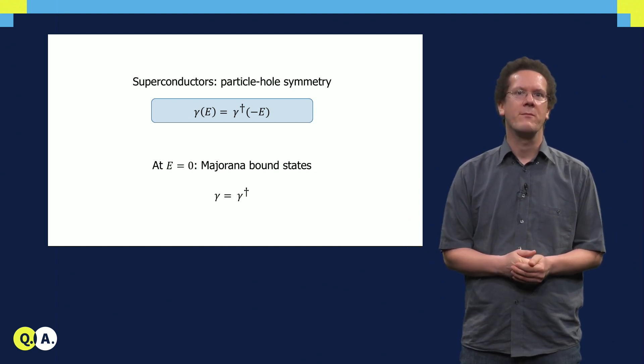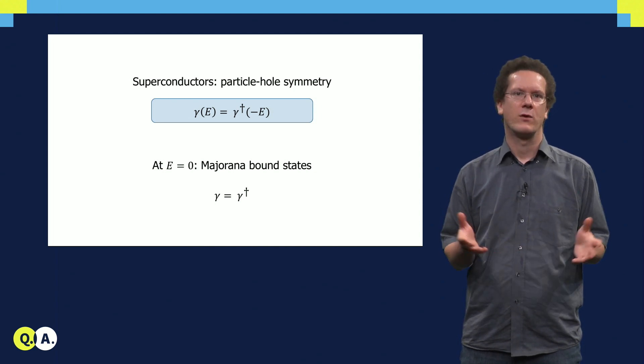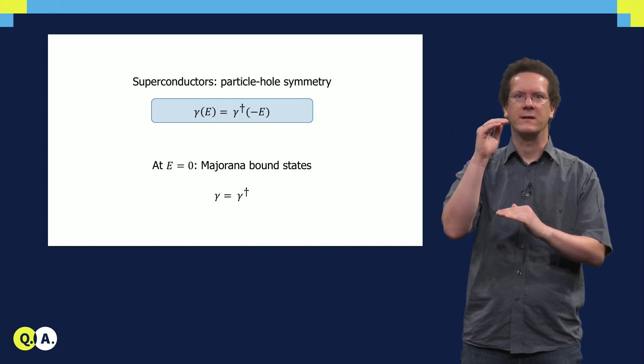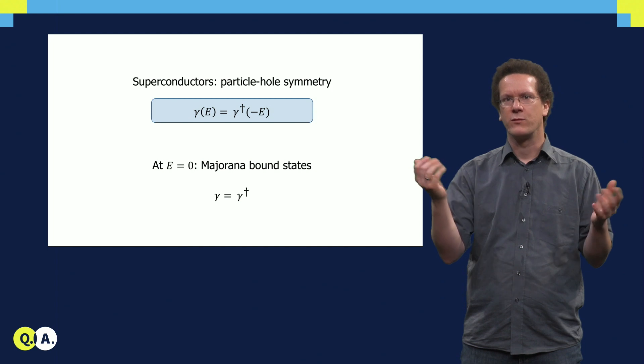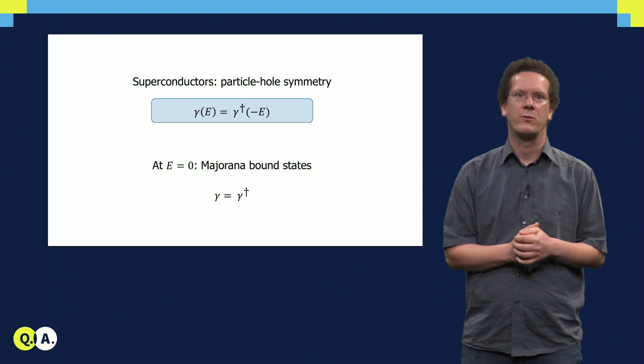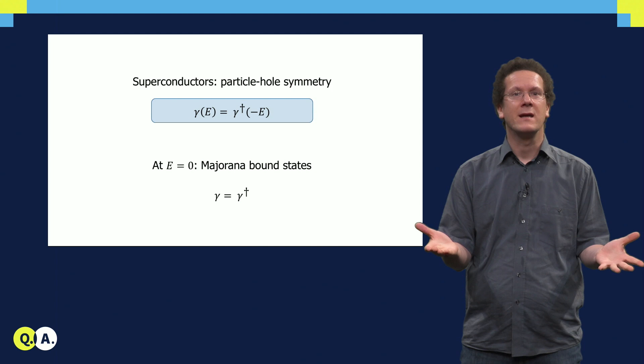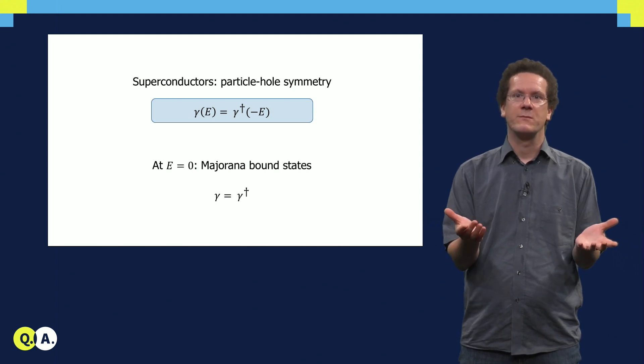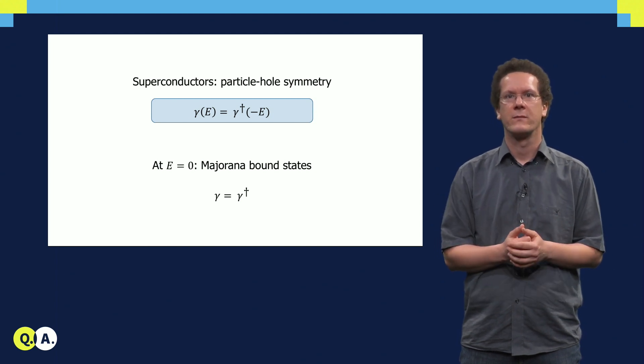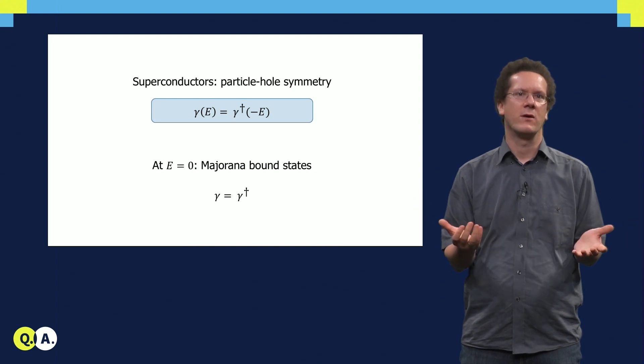The blurring of electron and hole can be described mathematically as a so-called particle-hole symmetry. For a particle at energy E, you must have an antiparticle at energy minus E. That is given by this formula here, with the annihilation operator gamma at energy E equals the creation operator at energy minus E. For zero energy we then immediately get Majorana bound states. In this case the Majorana creation operator gamma dagger equals the annihilation operator gamma. So all we need to do is look for states in superconductors with zero energy.